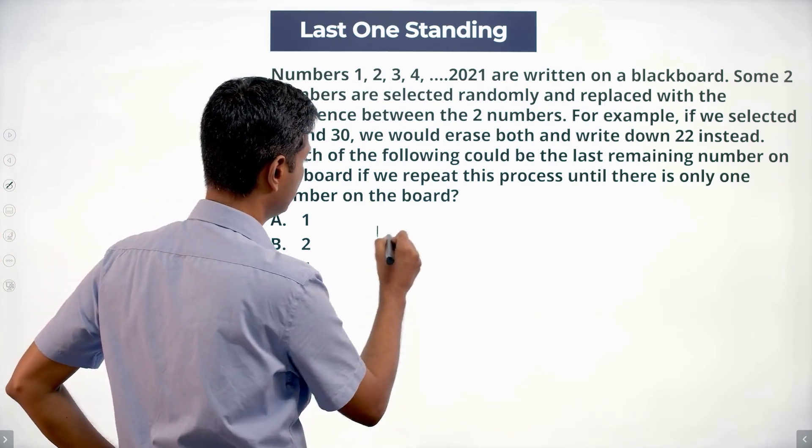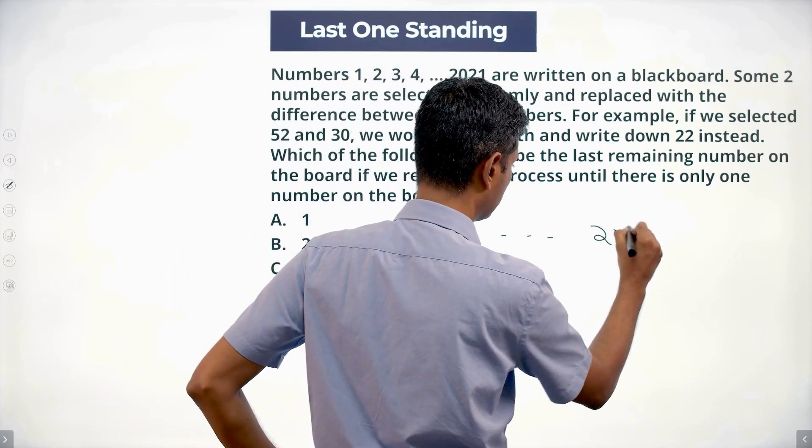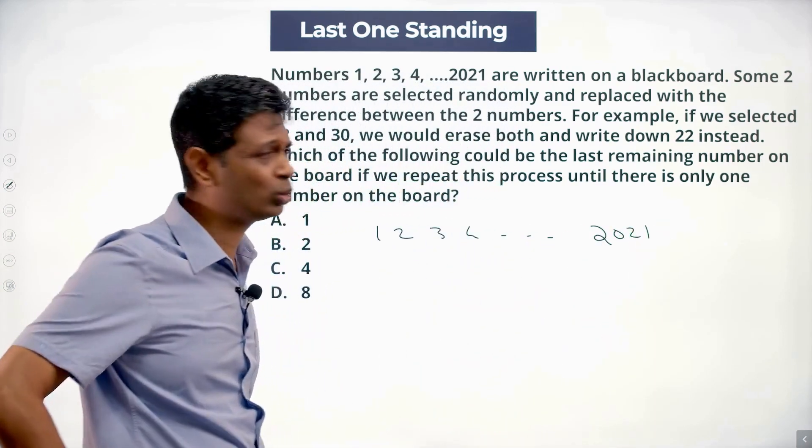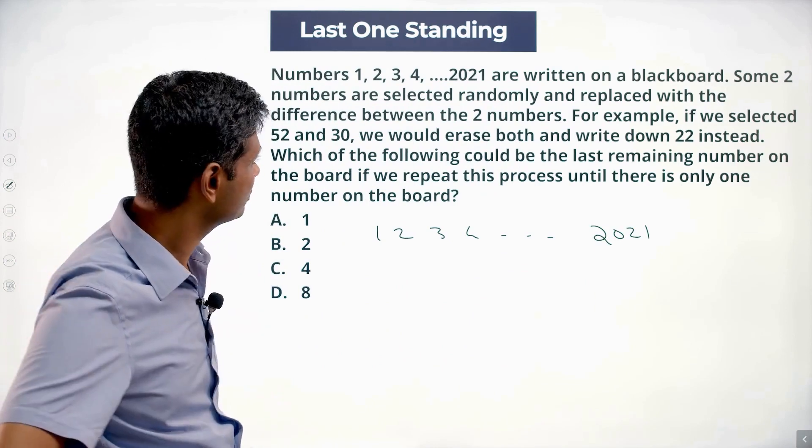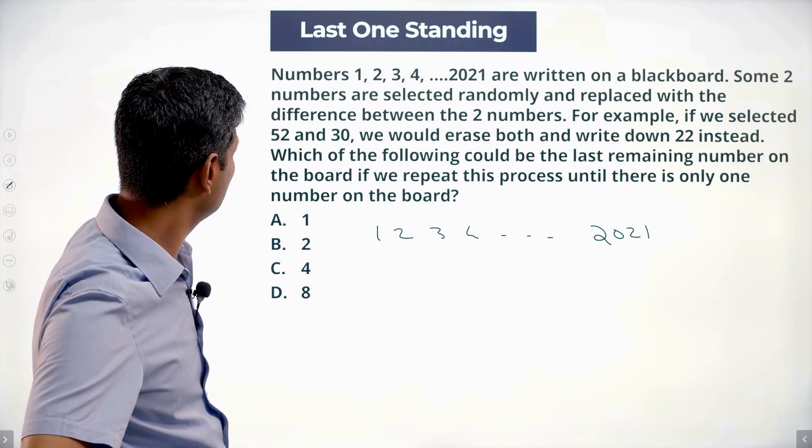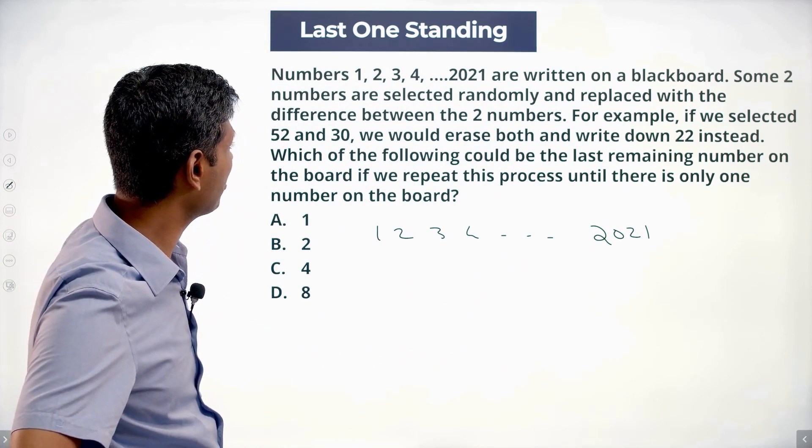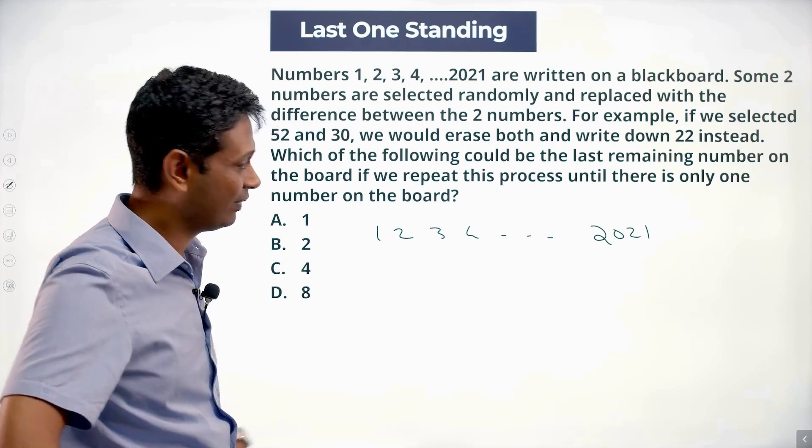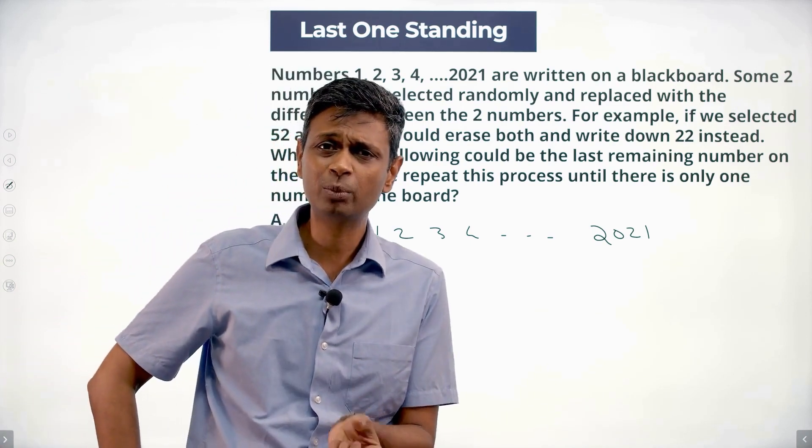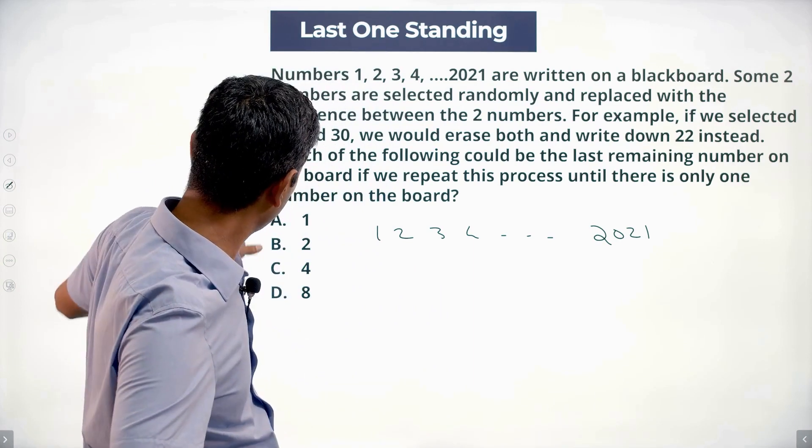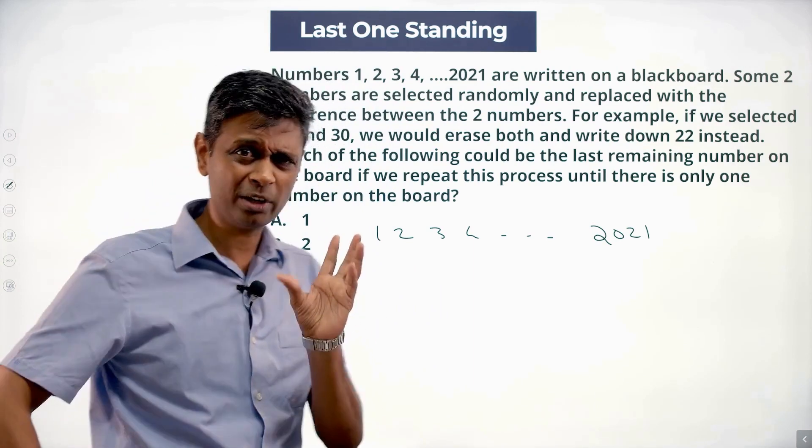So 1, 2, 3, 4, 5 through 2021, we erase some two numbers randomly and then the last remaining number, what could this be? We take some two numbers and replace it with a difference. My answer choices are 1, 2, 4, 8 - small numbers. I want to eliminate all the large numbers.